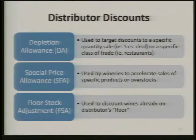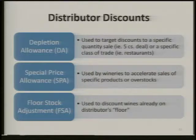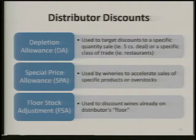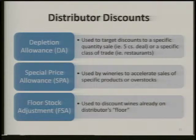In New York you can't sell to a restaurant for a different price than you sell to a retailer, but in Texas I believe you can — anything goes, you can sell to any customer for whatever price you want. A depletion allowance might work like this: your FOB is $100 a case, but for anybody buying five cases you tell your distributor you'll give a $5 depletion allowance passed on to the customer, helping generate volume.